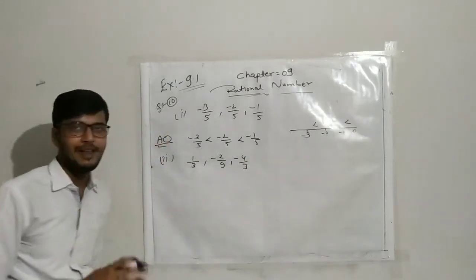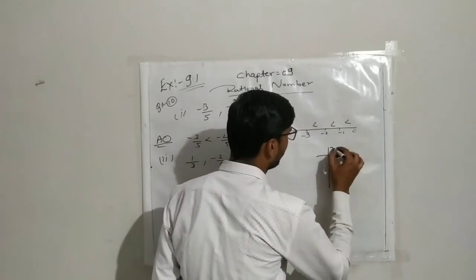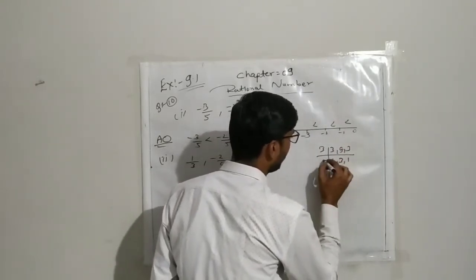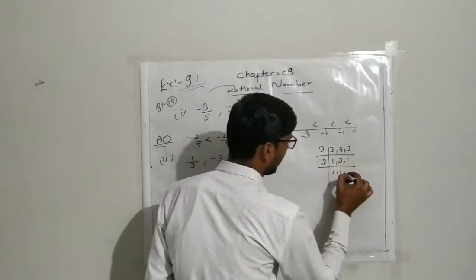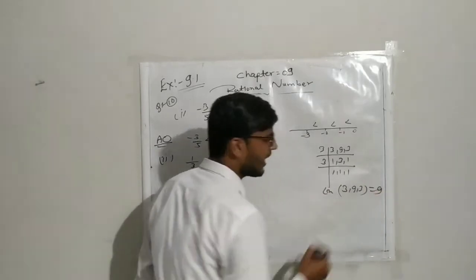Here neither the denominator nor the numerator values are the same. So you have to take the LCM of 3, 9, and 3. So 3 by 3, 3 threes are 9, and 3 by 3 again. So LCM of 3, 9, and 3 is 9.